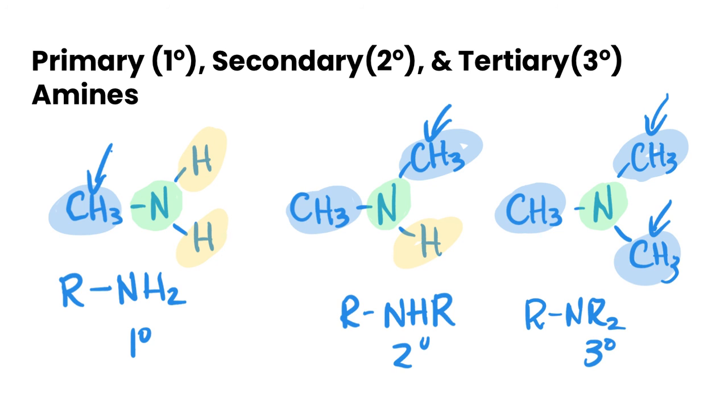It depends on how many alkyl groups are attached in these two other positions on the nitrogen group. That's it for primary, secondary, and tertiary alcohols, halogenoalkanes, and amines. That's it for this video. We'll see you in the next one.